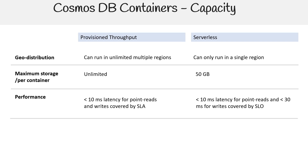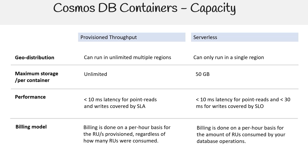Performance-wise, both options deliver less than 10ms latency for point reads. However, provisioned throughput guarantees less than 10ms latency for writes under its SLA, while serverless offers less than 30ms for writes as covered by its SLA. Regarding billing, provisioned throughput charges per hour based on the set RU/s irrespective of actual consumption. On the other hand, serverless charges are based on the actual RU/s consumed by your operations, billed on an hourly basis.